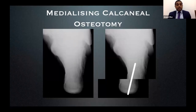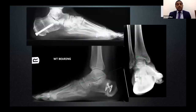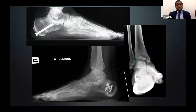The osteotomy can be done open or MIS — the principle is to medialise the calcaneum, and it's important to medialise it sufficiently, ideally at least 10 millimetres for a good correction. I prefer to use a plate because it allows me to know exactly how much I'm transferring and to control the movement as I tighten the plate down. You can see on the AP and heel views how much correction has been achieved.